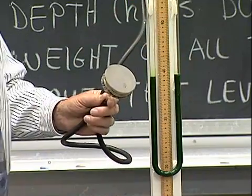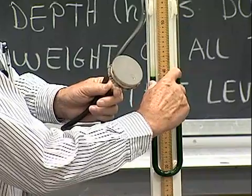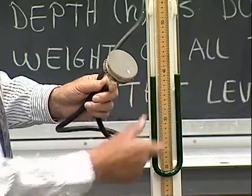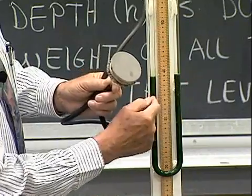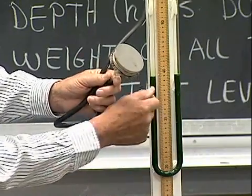that pressure difference will show up as being proportional to the height difference of these two sides of the U-tube.